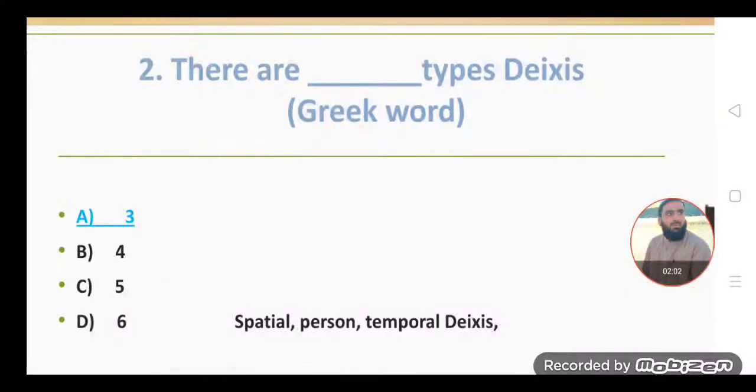Spatial deixis refers to space or place. Personal deixis refers to person, like him, his. Temporal deixis refers to time, like now, then, last week, last day.